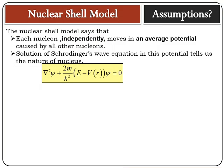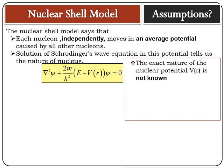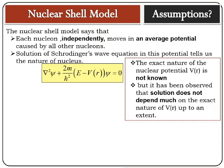The solution of Schrödinger's wave equation in this potential gives us insight about the nature and structure of the nucleus. The equation is: del-squared psi plus (2m / ħ²)(E − V(r)) psi = 0, where m is the mass of the proton or neutron, and V(r) is the average potential. Unfortunately, the exact nature of the nuclear potential V(r) is not known to us. However, it has been observed that the solution of Schrödinger's wave equation does not depend much on the exact nature of V(r), giving us a degree of freedom to choose any V(r) satisfying the basic nature of nuclear forces.